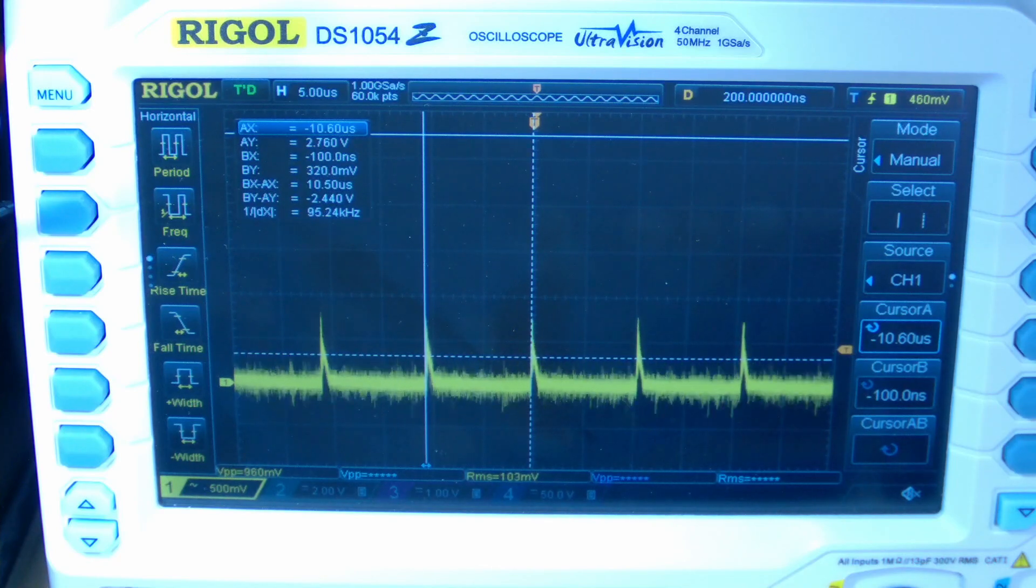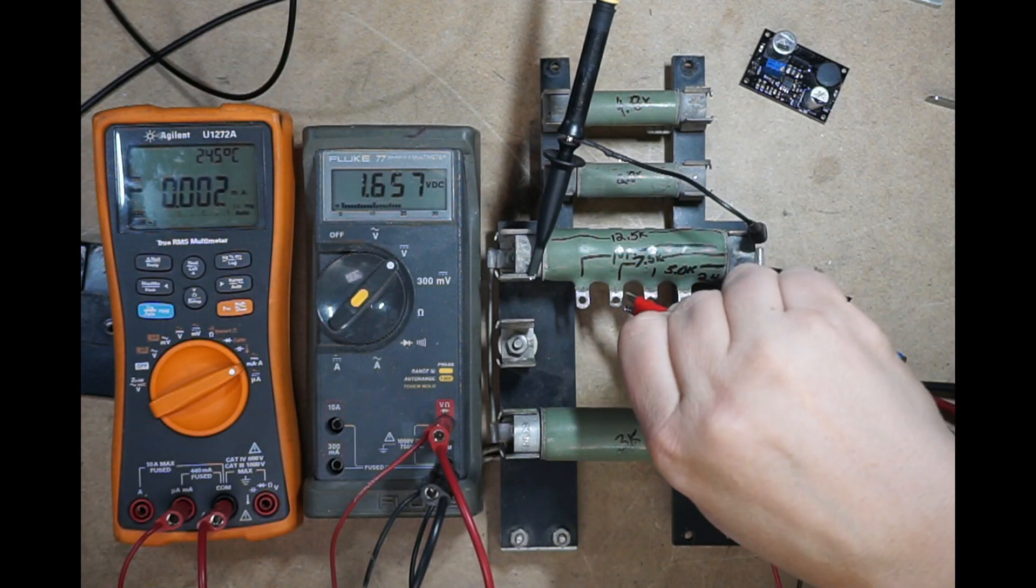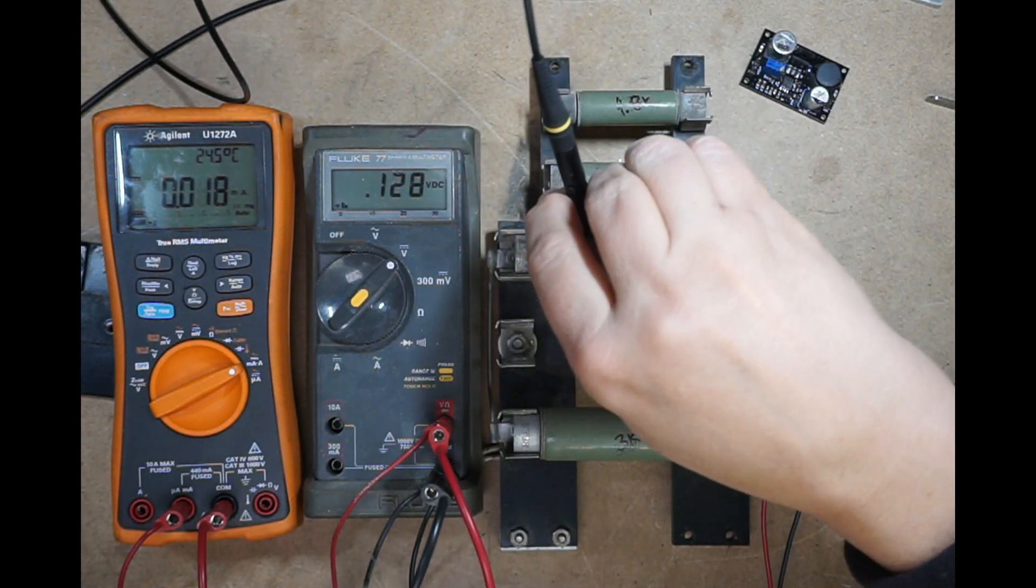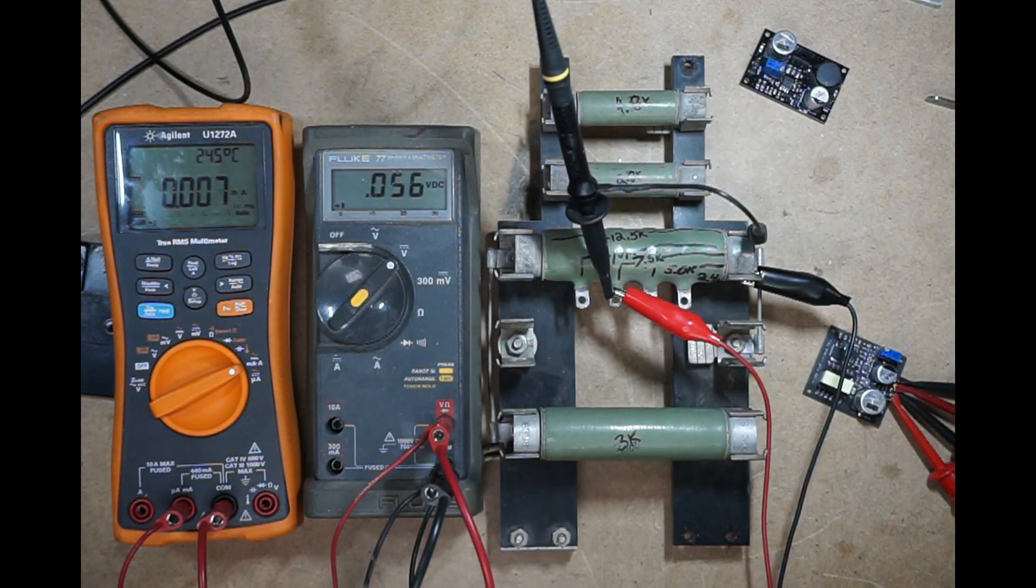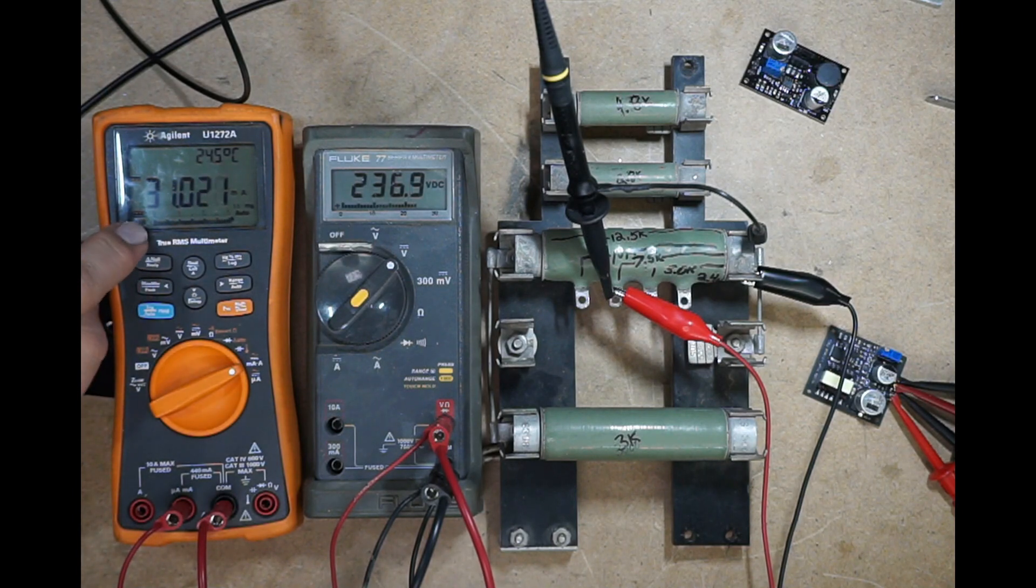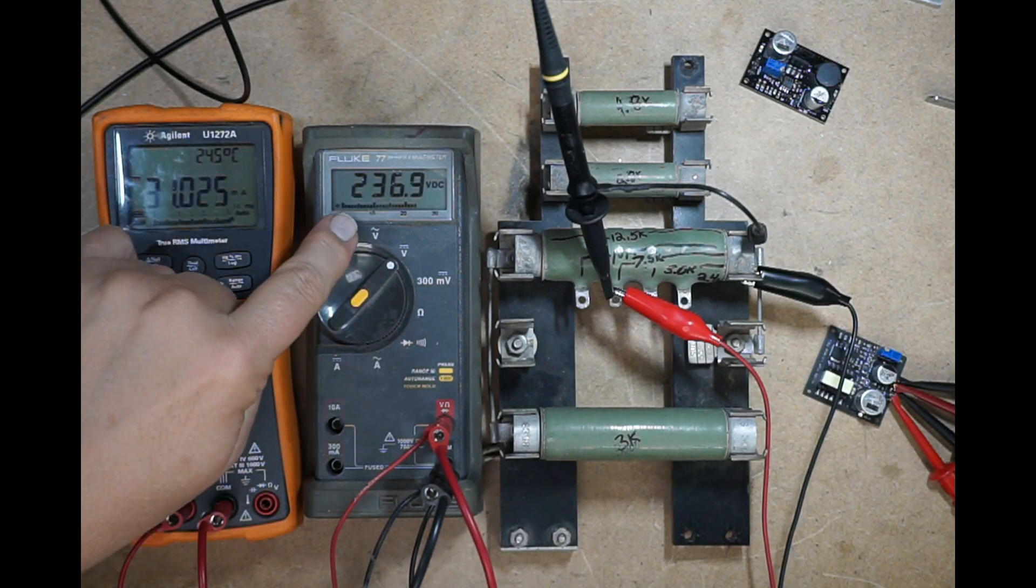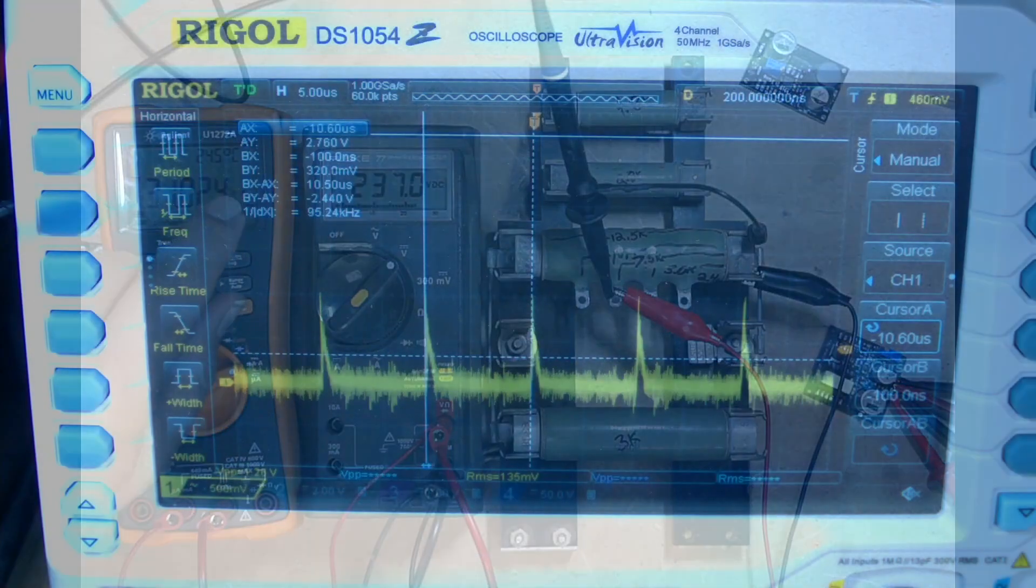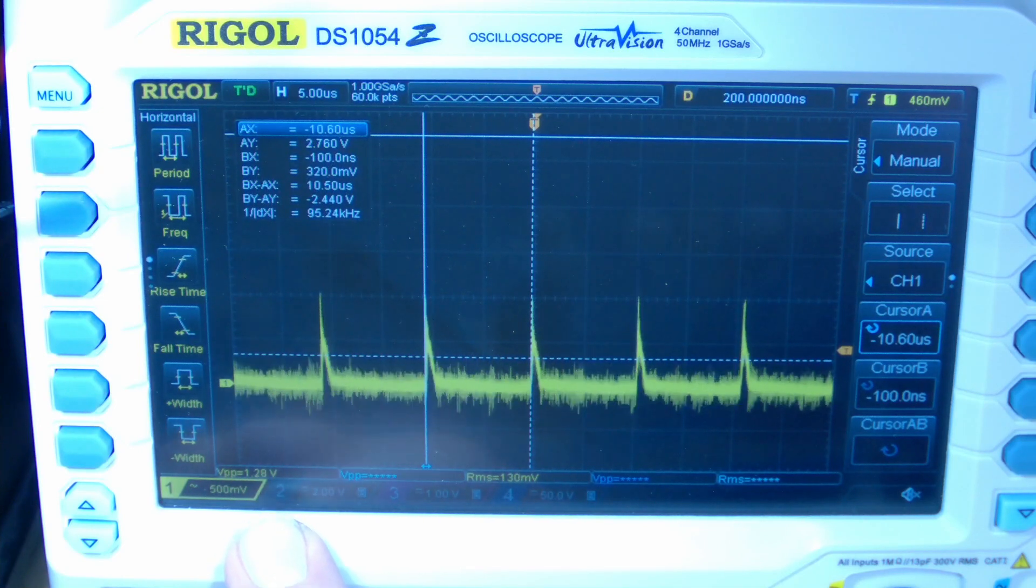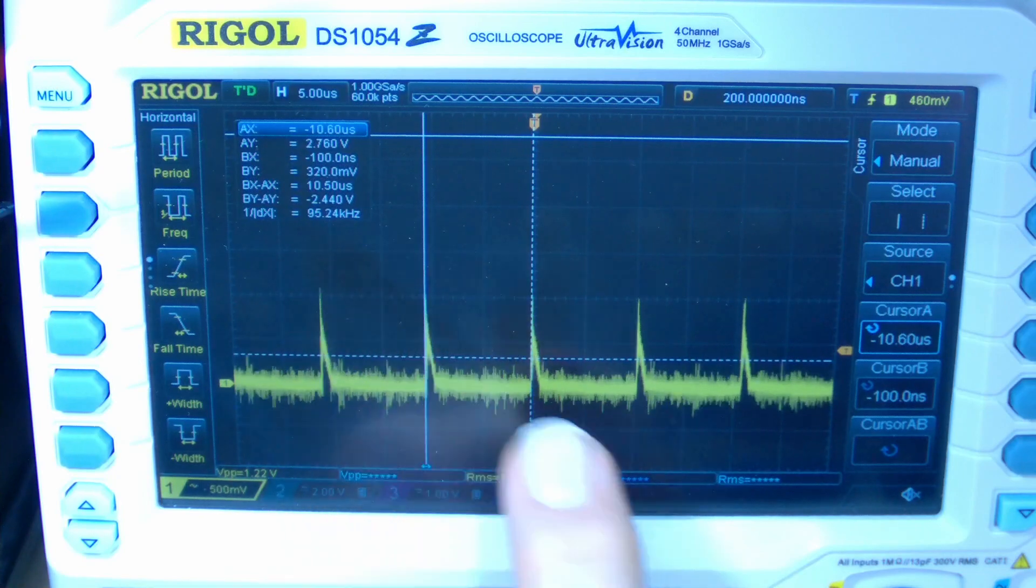Let's load this guy up. We'll turn this off. We're going to change our load resistor from 12.5 to 7.5. So now we're basically up to 31 milliamps at 237 volts. So we really haven't seen a voltage level drop over here. Over here on the scope, we're seeing a little bit higher peak voltage of about 1.2 volts. And we're still at 95 kilohertz. So that's good.